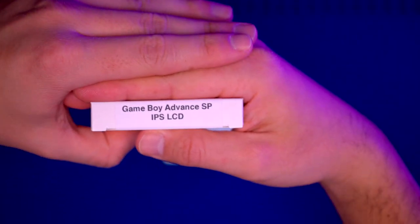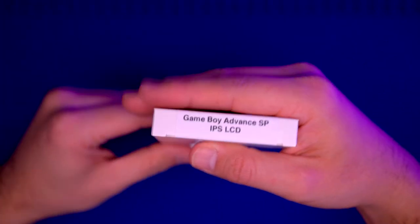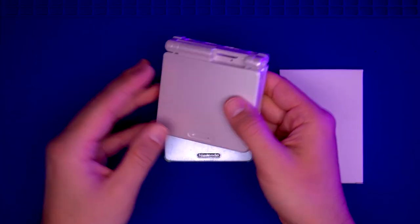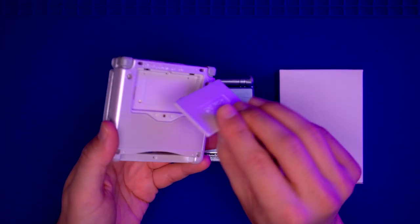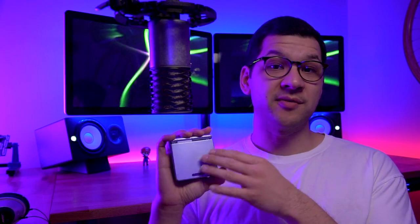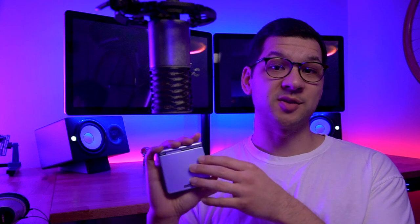For this build, we're going to be using a Funny Playing IPS kit as well as a pre-trimmed Game Boy Advance SP shell, both of which are from Retro Modding. I think it's going to really breathe new life into this tired and old Game Boy Advance SP.